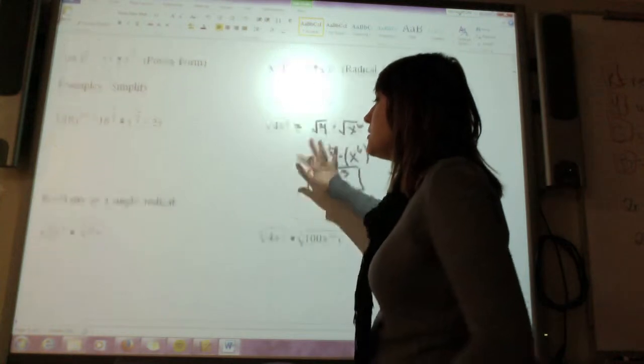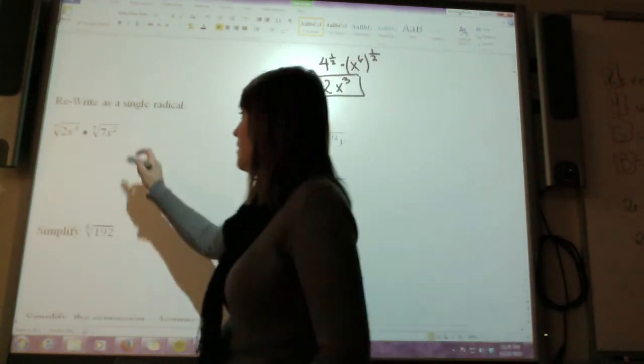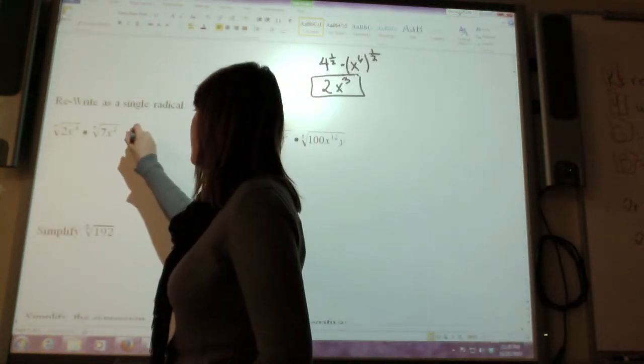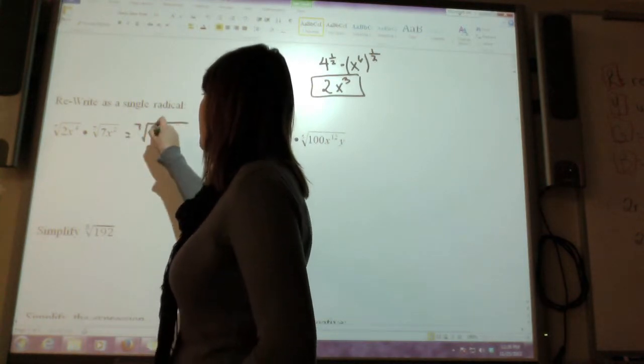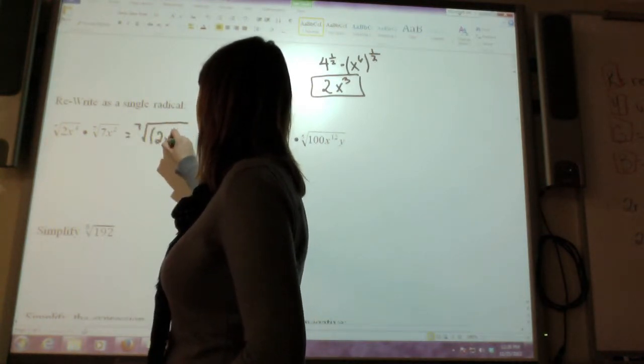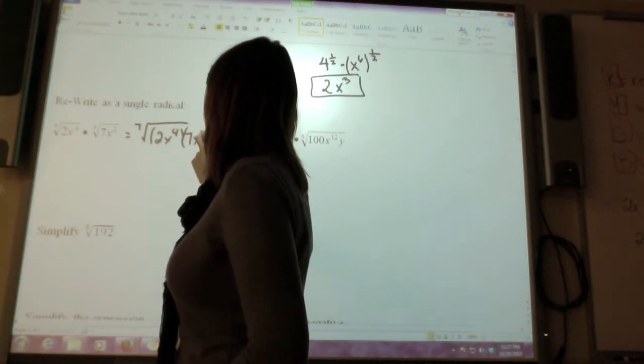Okay, so what I'm going to do is I'm going to go through, and I'm just going to combine these using that root of a power form. So I know that this is the same thing as the seventh root of 2x to the fourth times 7x squared.